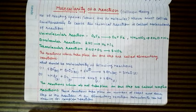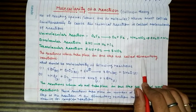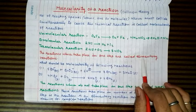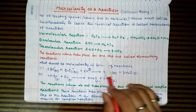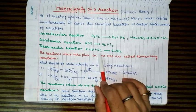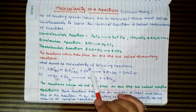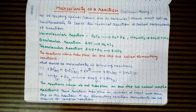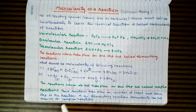Elementary reactions take place in a single step, and their molecularity is equal to the number of moles of reacting species taking part in the reaction. So if the molecularity equals the stoichiometric coefficient, it means the reaction is an elementary reaction occurring in a single step.